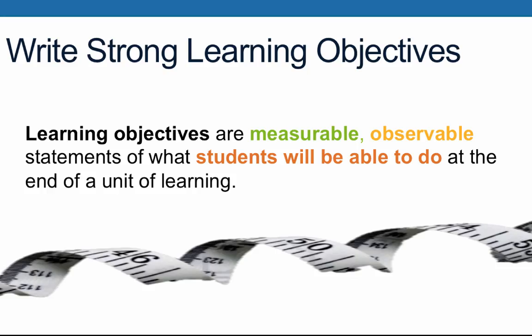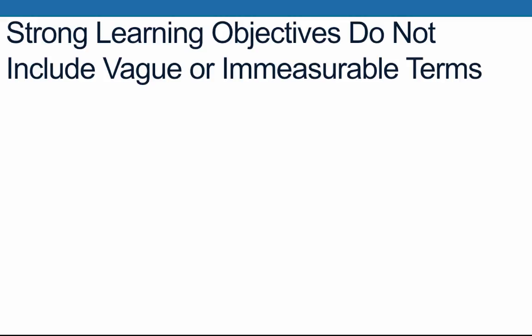Now that we've learned how to use Bloom's Taxonomy to help us write learning objectives, and as you work through developing a course design matrix for your course, you should strive to write strong learning objectives. As we learned in the other video on course and learning objectives, learning objectives are measurable, observable statements of what students will be able to do at the end of a unit of learning. With this in mind, it is important to emphasize that strong learning objectives do not include vague or immeasurable terms.